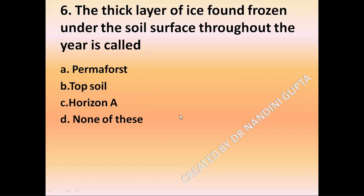Question 6: The thick layer of ice found frozen under the soil surface throughout the year is called — option A, permafrost; option B, top soil; option C, horizon A; option D, none of these.